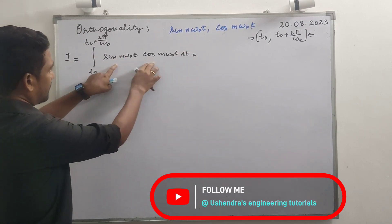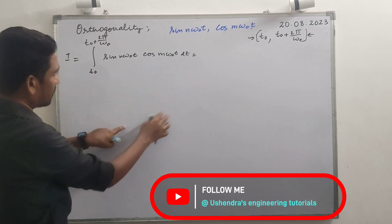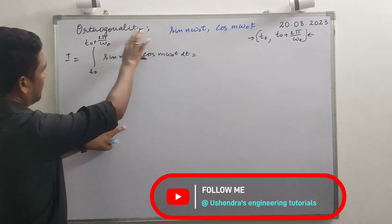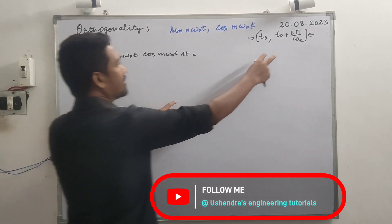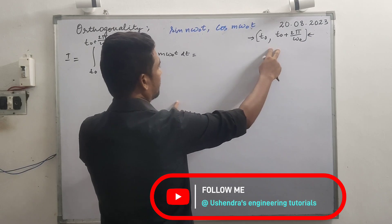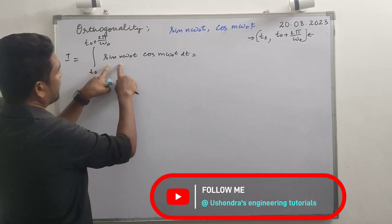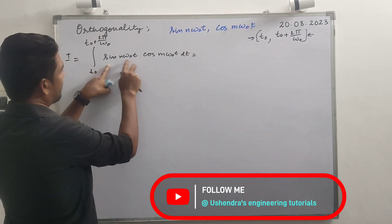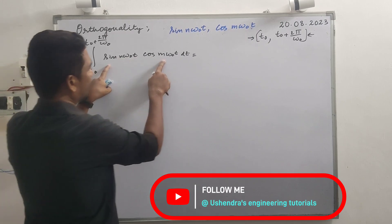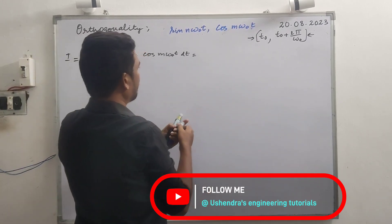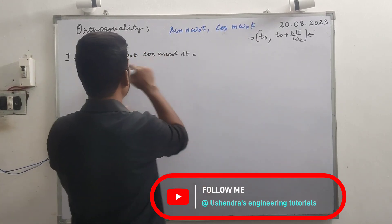After simplification, if it leads to zero, then they are orthogonal over the given interval. Here we apply a trigonometric identity: sin(a)cos(b) equals half of [sin(a+b) plus sin(a−b)].